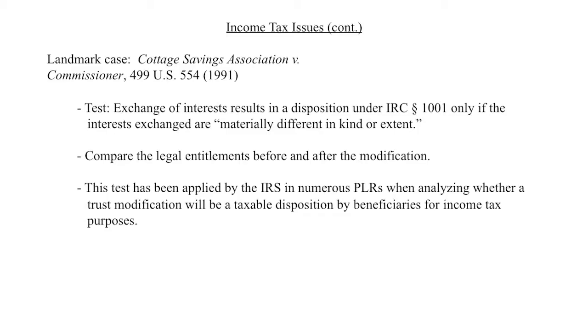For the modification step, the landmark case Cottage Savings v. Commissioner — a 1991 Supreme Court case cited in numerous PLRs dealing with trust modifications — provides the key test. Look at what a party has before the transaction and after; if they have legally distinct entitlements to property in those two situations, it's a taxable disposition. The actual language: 'an exchange of interest results in a disposition only if the interests are materially different in kind or extent.' Here, the beneficial interests before and after modification are not materially different, so there is no taxable disposition.